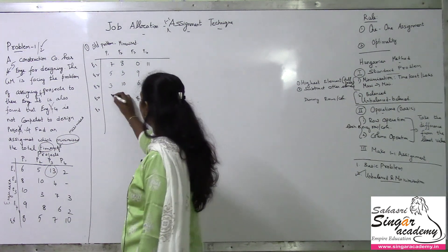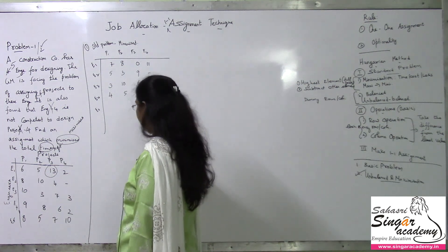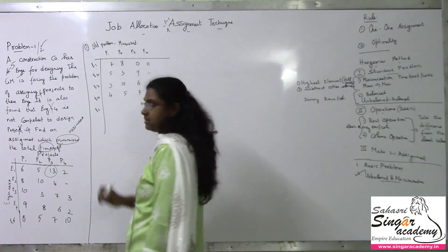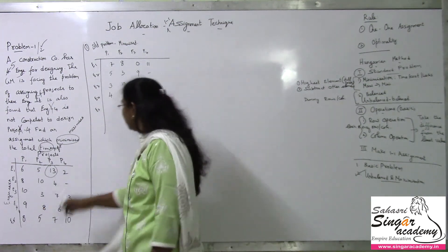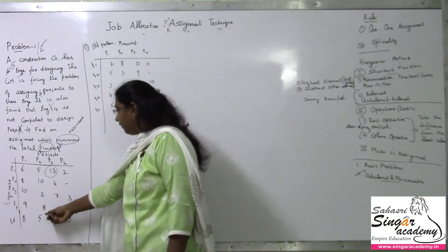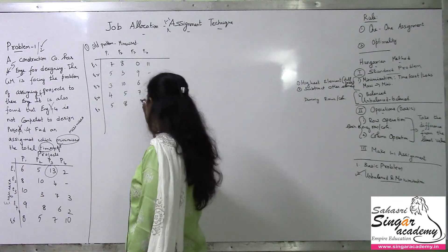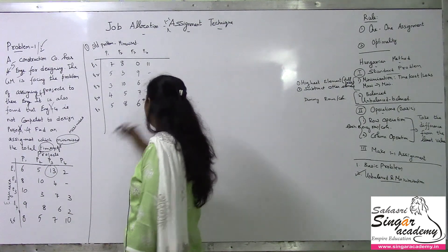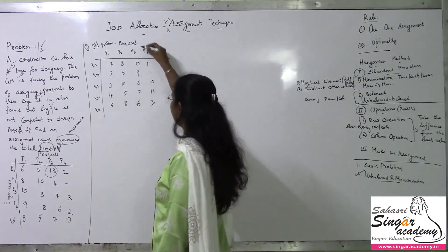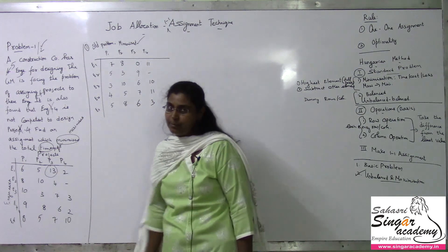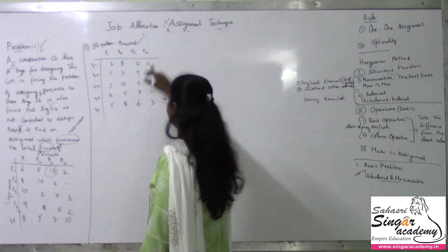For engineer 4: 4 loss, 5 loss, 7 loss, 11 loss. For engineer 5 — with values 8, 5, 7, and 10 — that gives 5 loss, 8 loss, 6 loss, and 3 loss. So I have now taken this as a minimized problem, not a maximized problem. This is with respect to minimization.